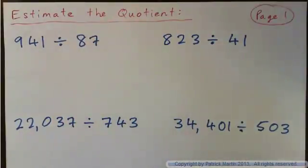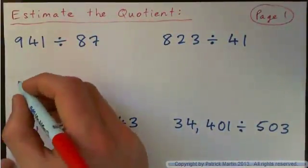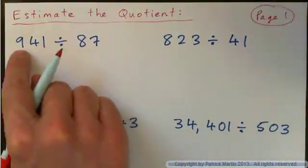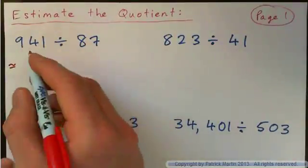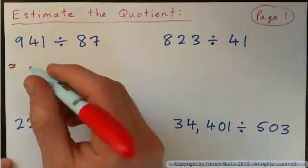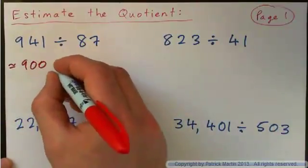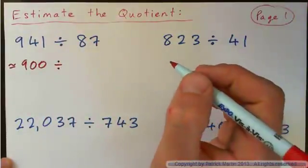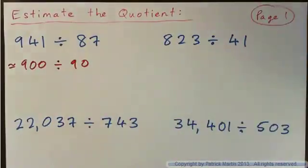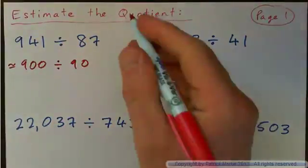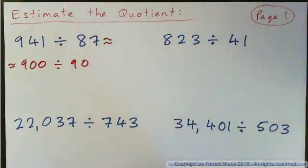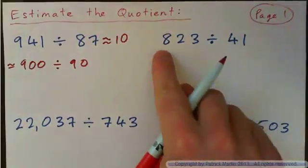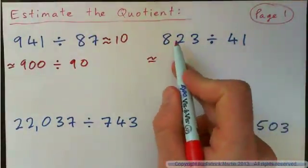One thing we could try is to round these numbers. This is close to 900, so round to the nearest hundred and get 900. Round 87 to the nearest 10 and you get 90. So what's 900 divided by 90? That's approximately 10.